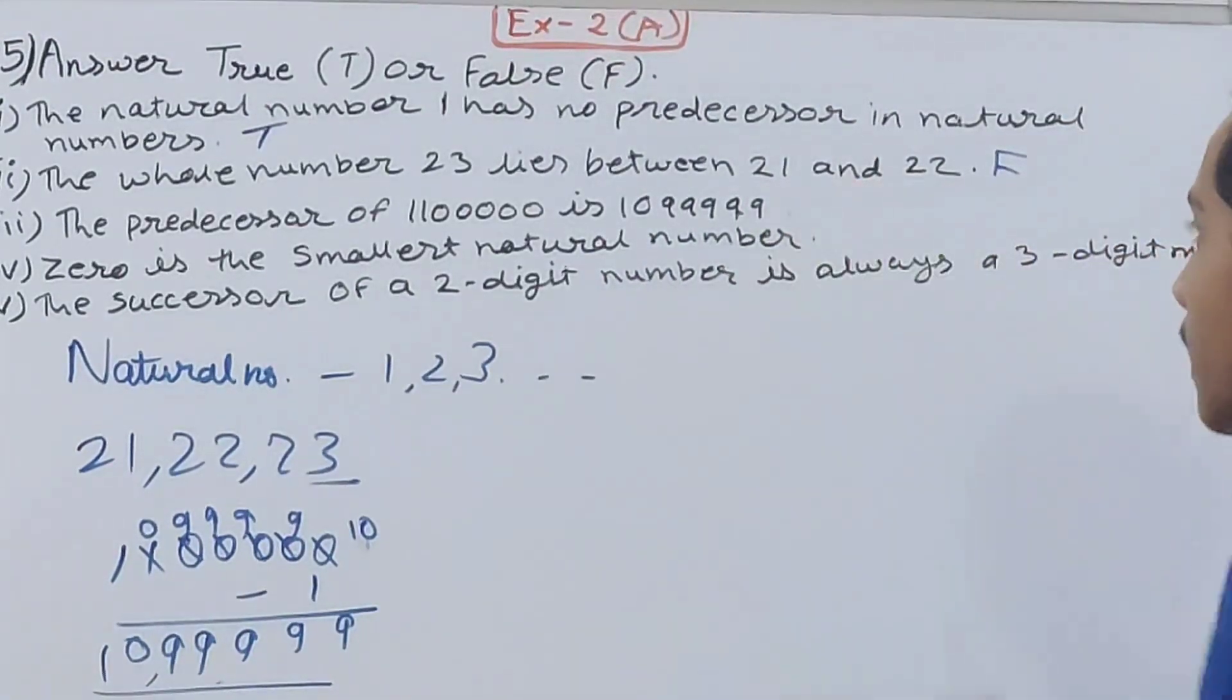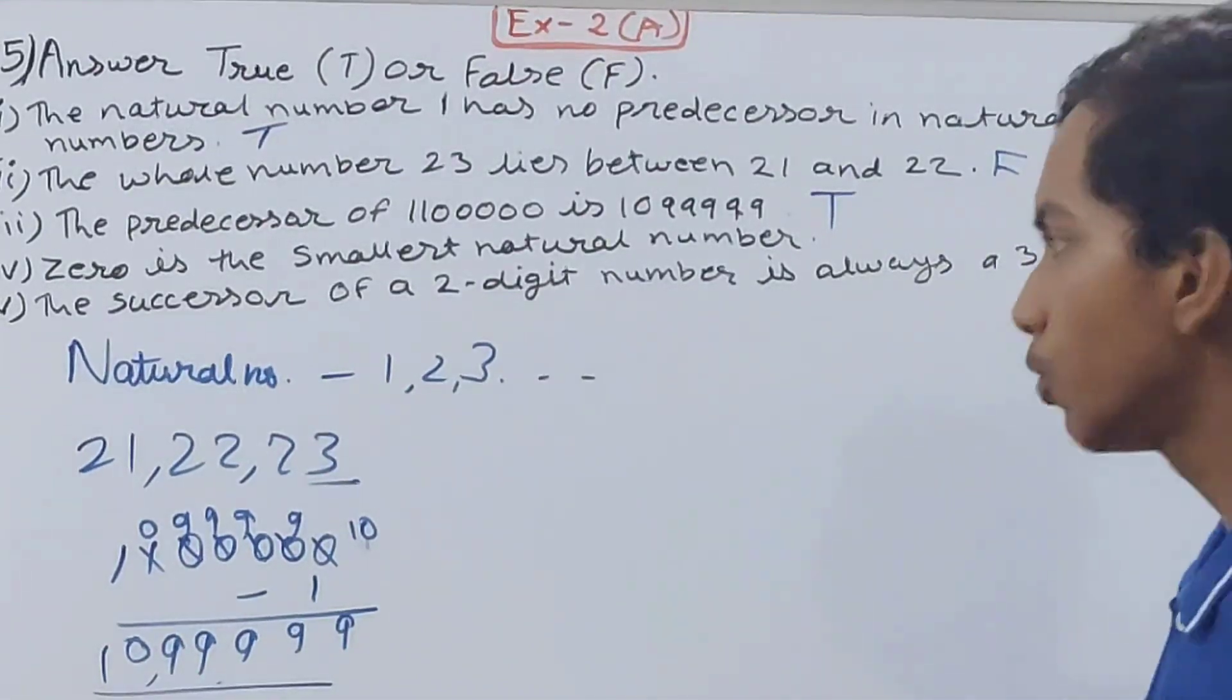0 is the smallest natural number. Of course not true, because natural numbers begin from 1, and the smallest natural number is 1. So this statement is false.